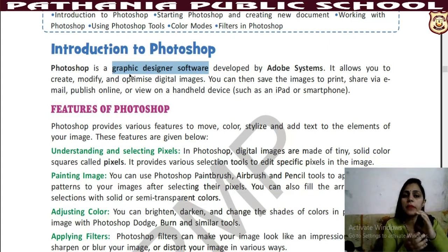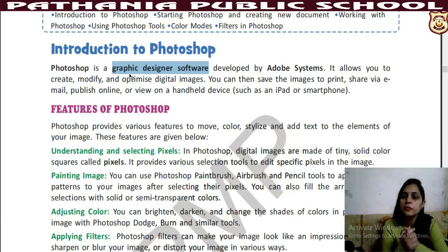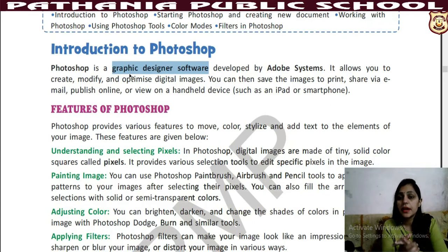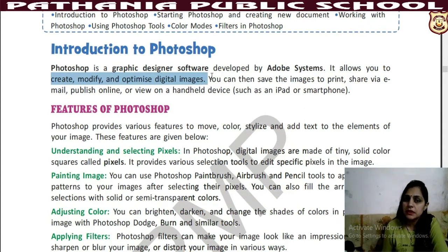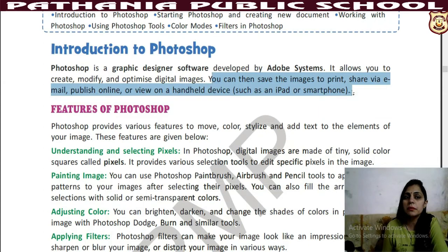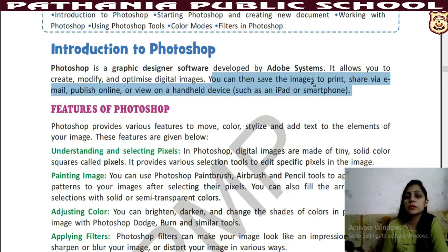For example, on your phone, if any pic is blurry and not clear, it's a bit typical to fix easily. But with the help of Photoshop, we can do these things easily — like if you want to crop a pic. Your pic has 9 to 10 friends but you want only your pic with 2 friends, then you can easily crop that with Photoshop. It allows you to create, modify, and optimize digital images. You can then save the images to print, share via email, publish online, or view on a handheld device such as an iPad or smartphone.